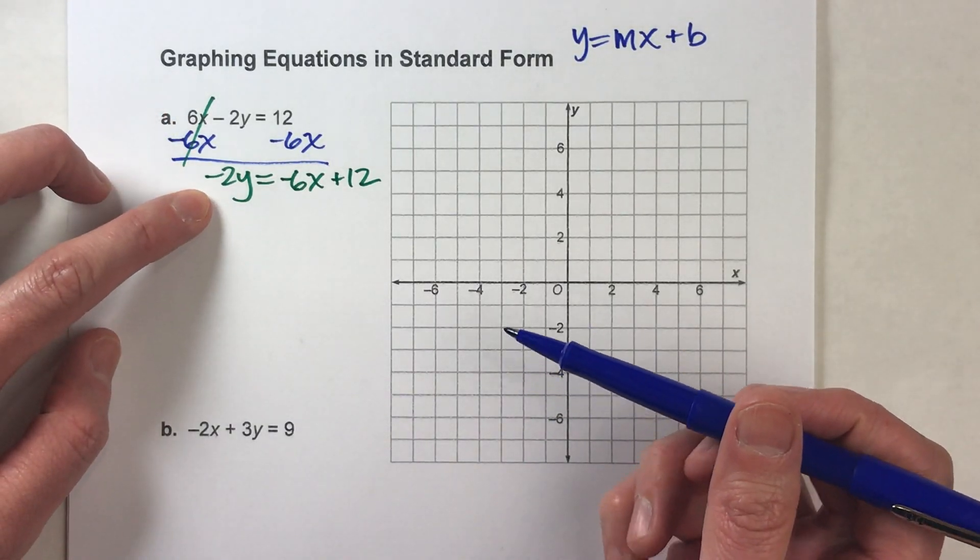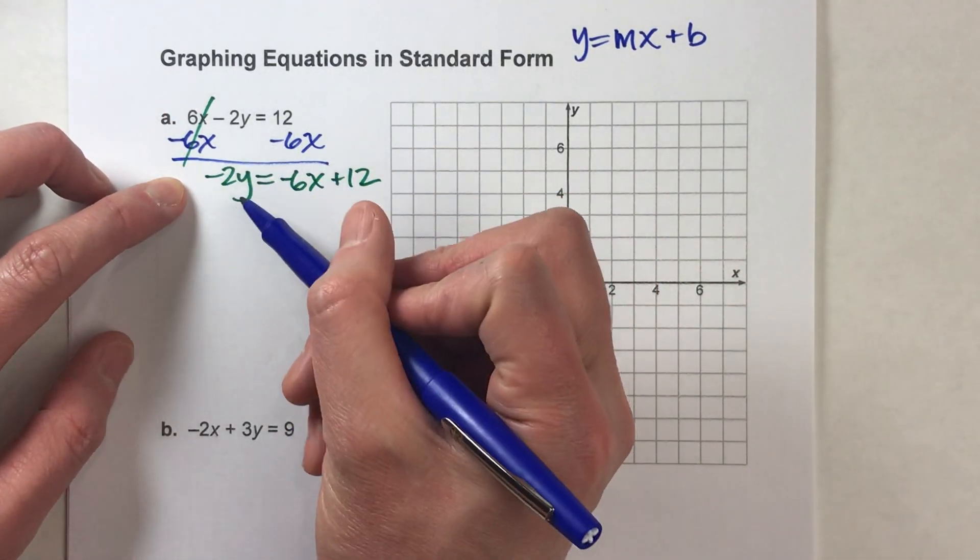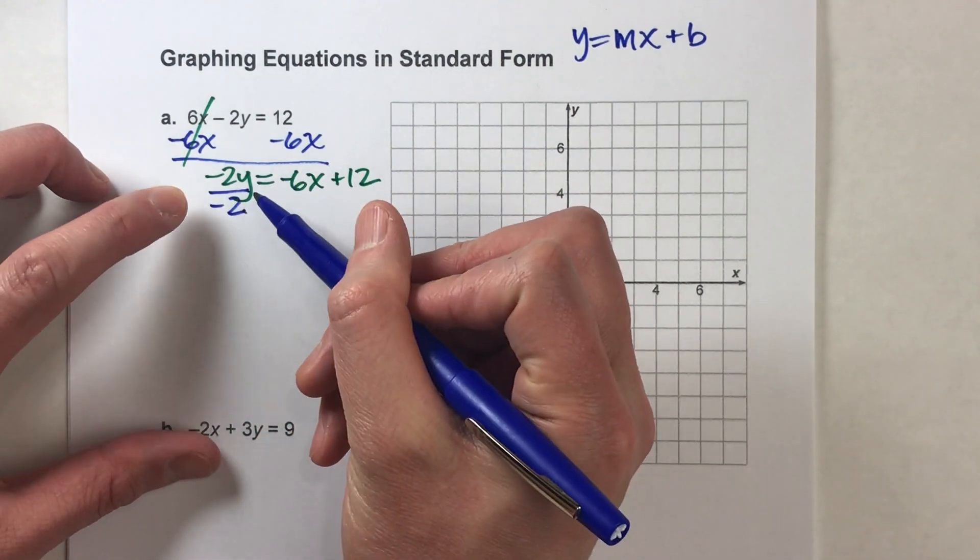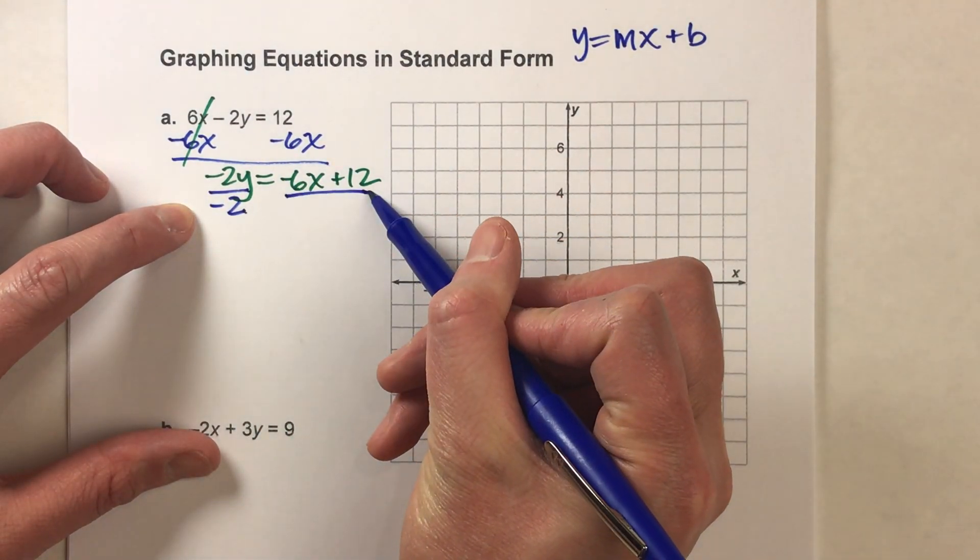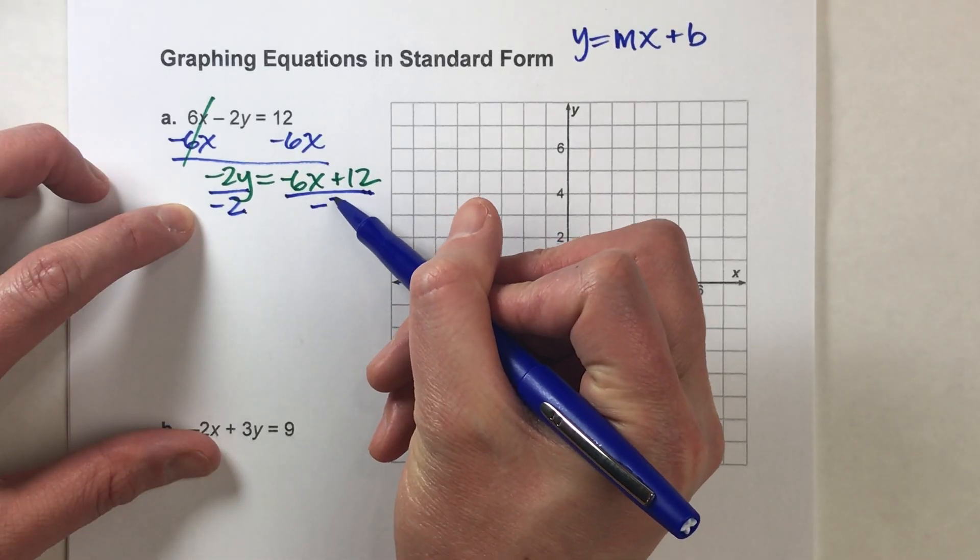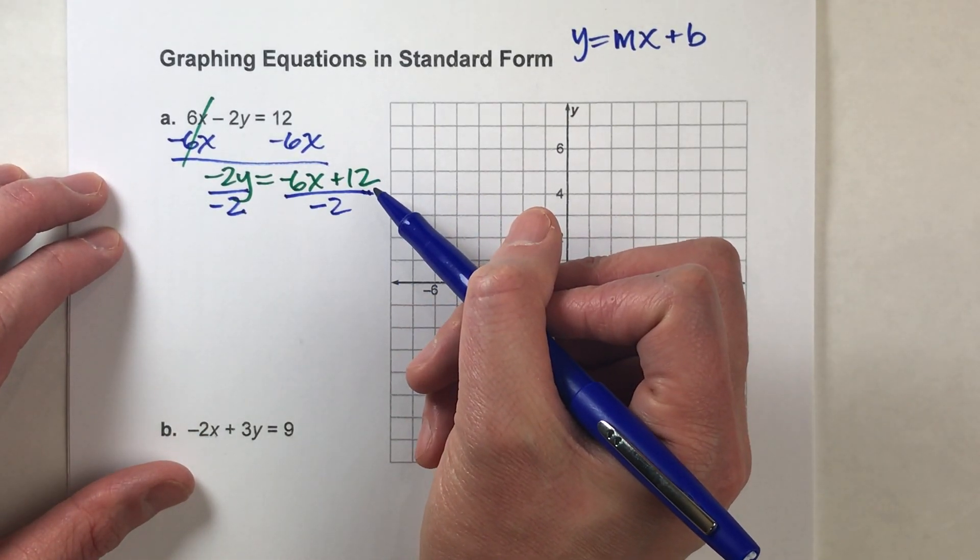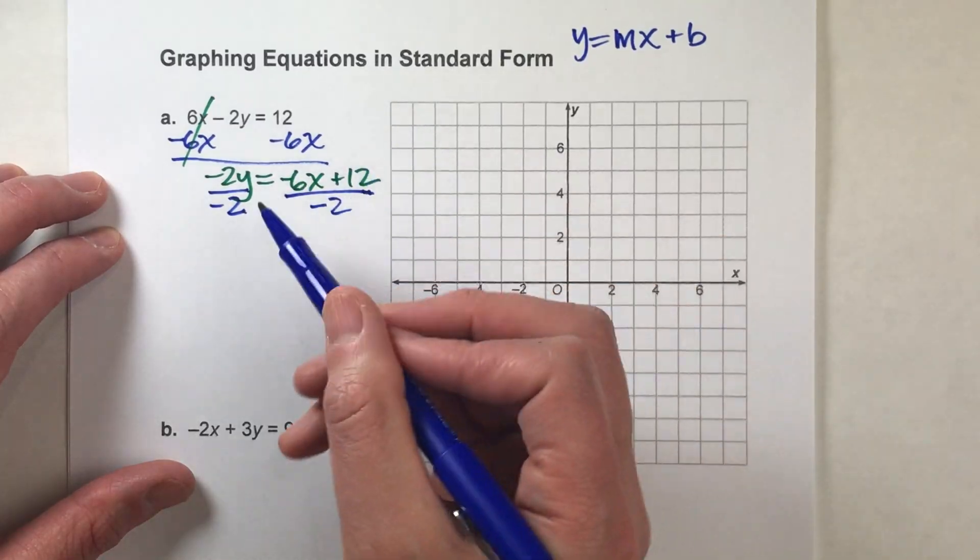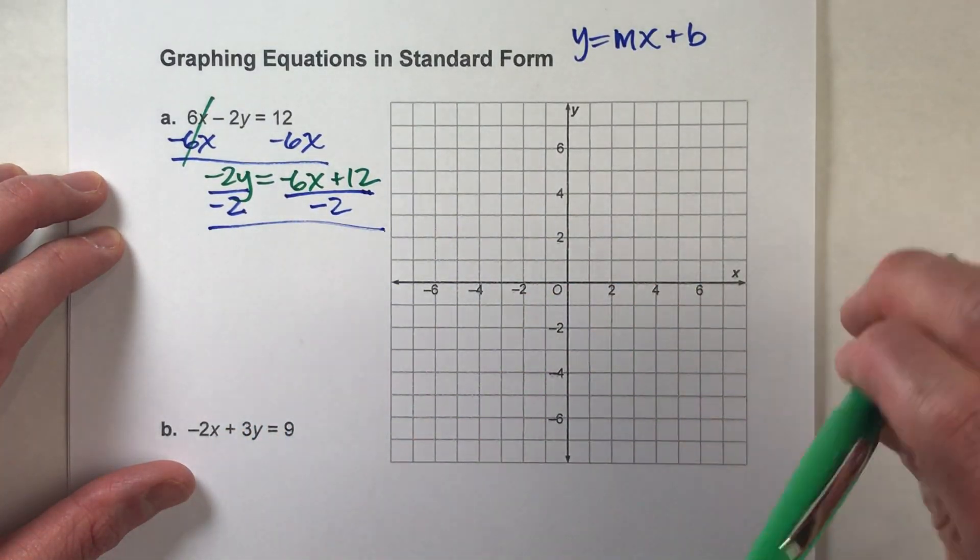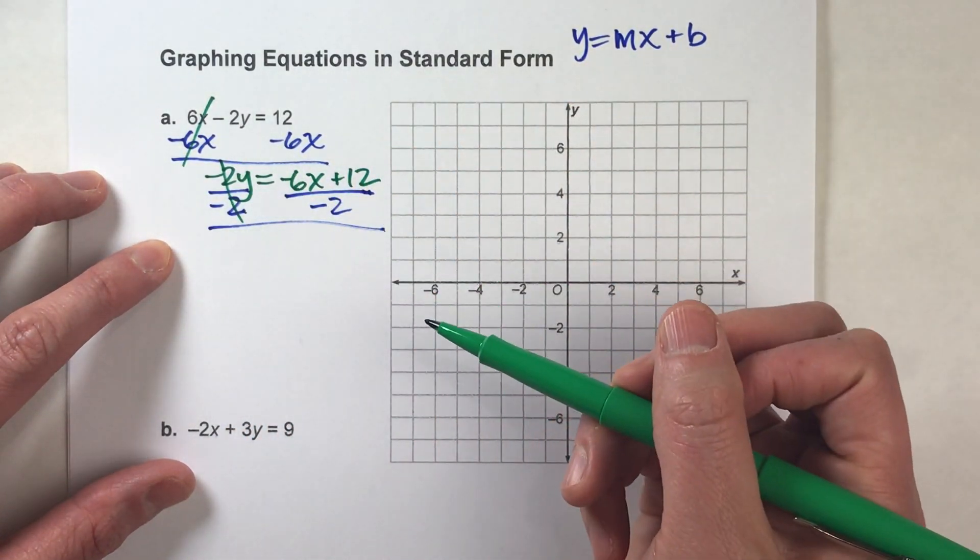Alright, I've almost got y by itself, but it says y times negative 2, so I'm going to divide by negative 2. What I do to one side I have to do to the other, and I have to do it to the entire other side, both the negative 6x and the 12. I have to divide the entire thing by negative 2, and when I do that, negative 2s undo each other.